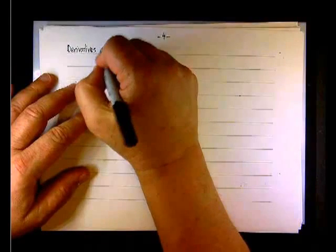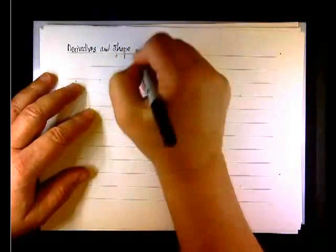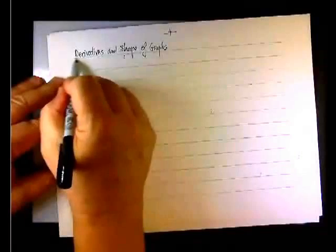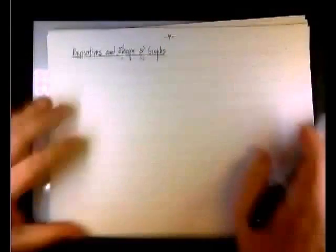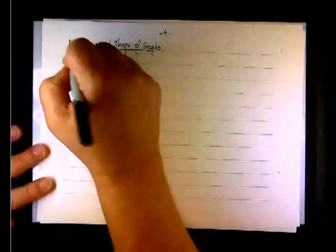Derivative shape of graphs. One thing we know already, written formally, is that if the derivative is positive on a certain interval, then the function is increasing. And if the derivative is negative, then the slope is negative and the function is decreasing. This leads to something we call the increasing-decreasing test, or the ID test.